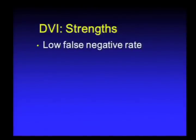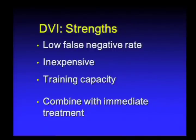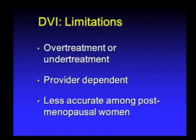Strengths of VIA include a relatively low false-negative rate, low cost, and providers can be readily trained. When combined with immediate treatment—typically cryotherapy, which involves freezing the cervix using a can of liquid nitrogen with a special cervical adapter to make a freeze ball—it is very easy to perform. Limitations include over-treatment, under-treatment, and poor accuracy in menopausal women, who are of course at major risk.